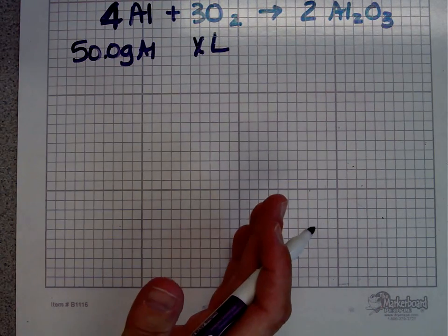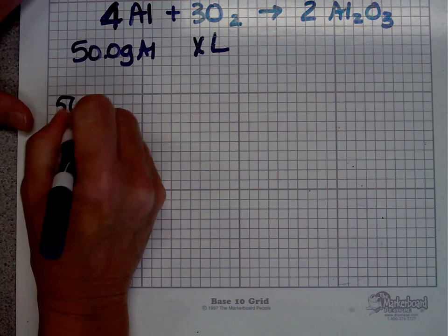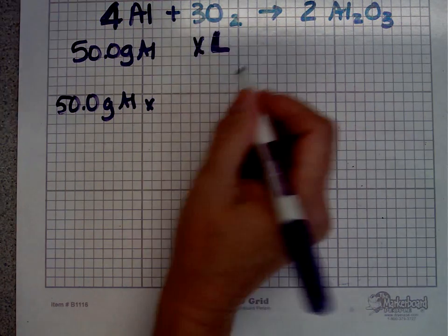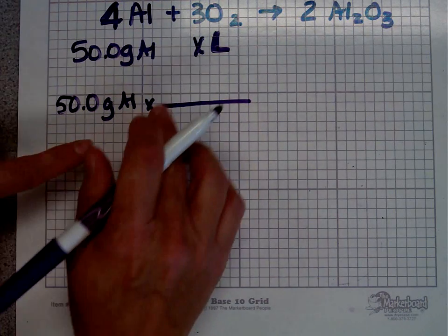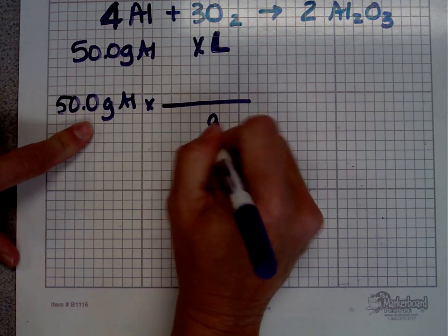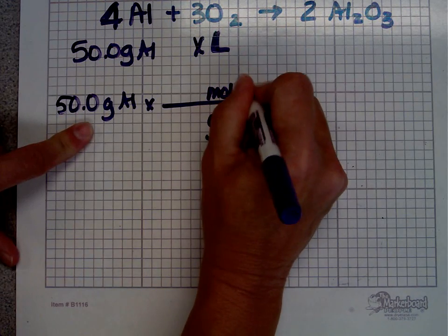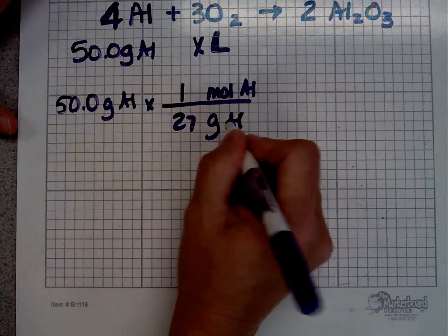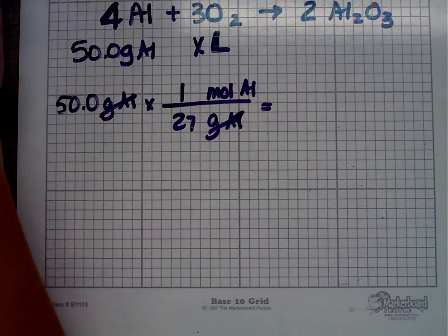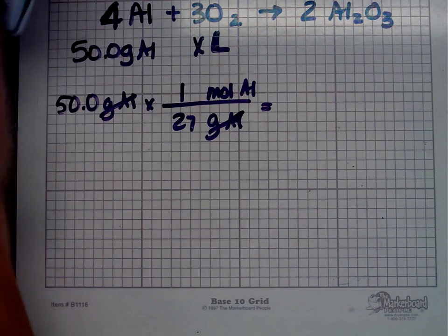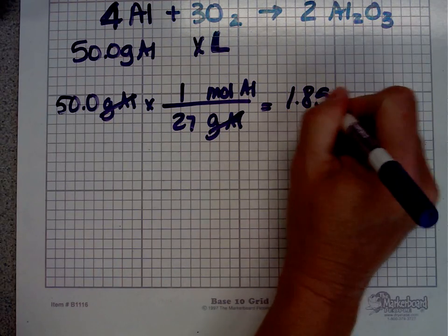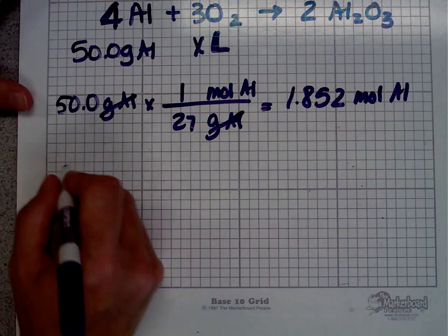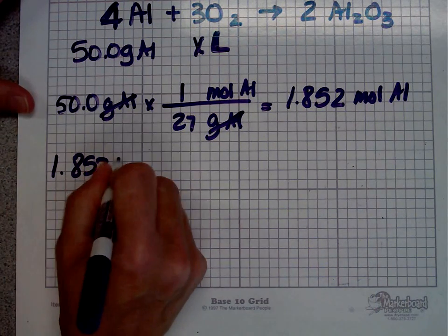Not sure how we're going to handle this problem yet, but I know we do the same thing every time, and that is we start out with what we know. I know I have 50 grams of aluminum, and I want to get to liters of oxygen. I can't go from grams to liters, I have to go from grams to moles. So first thing I need to know is how many moles is that? There's 27 grams, 27 goes next to the G for every mole. If I take my calculator, I have 50 divided by 27, that tells me there's 1.852 moles of aluminum.